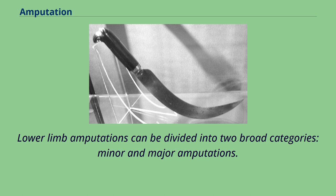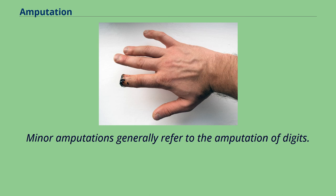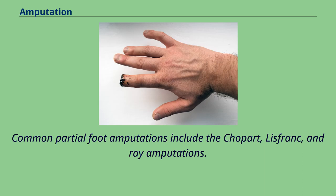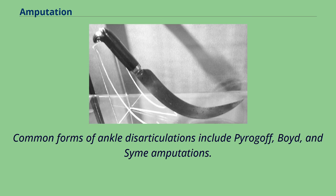Lower limb amputations can be divided into two broad categories: minor and major amputations. Minor amputations generally refer to the amputation of digits. Major amputations are commonly below-knee or above-knee amputations. Common partial foot amputations include the Chopart, Lisfranc, and ray amputations. Common forms of ankle disarticulations include Pirogoff, Boyd, and Syme amputations.